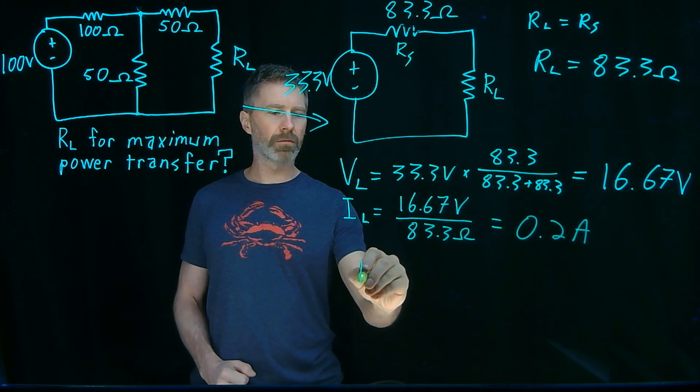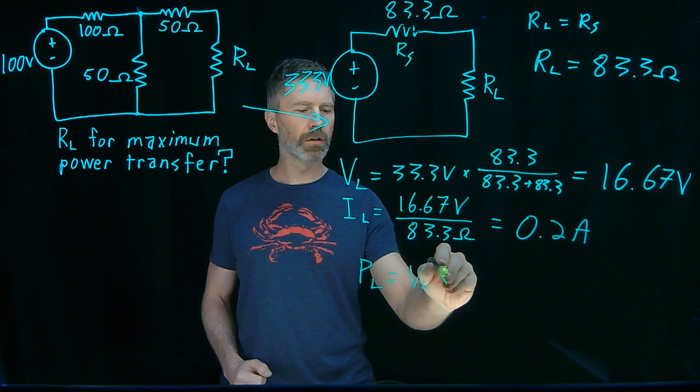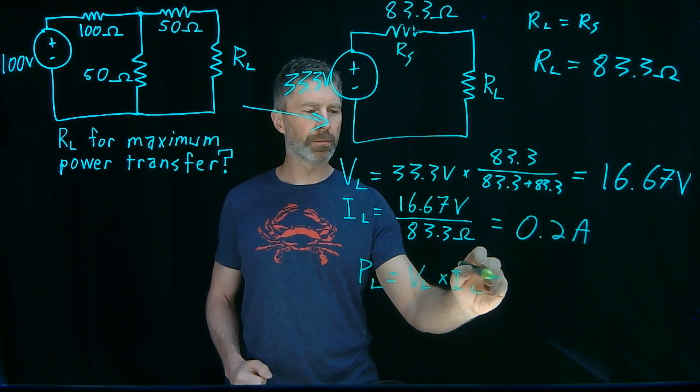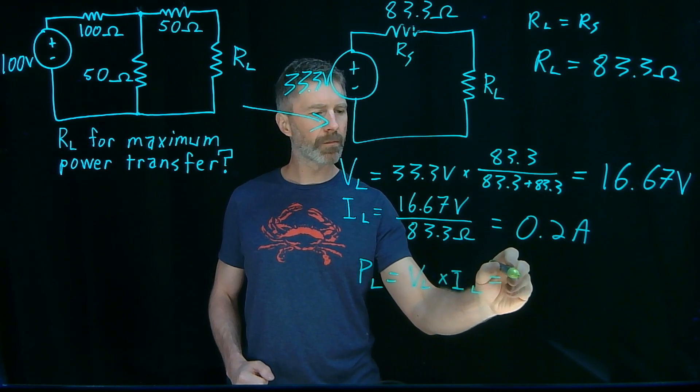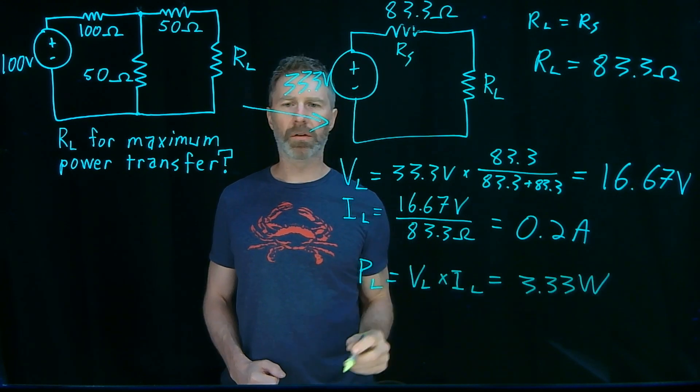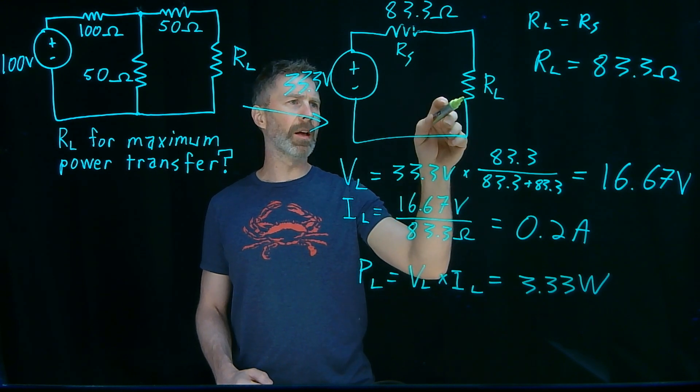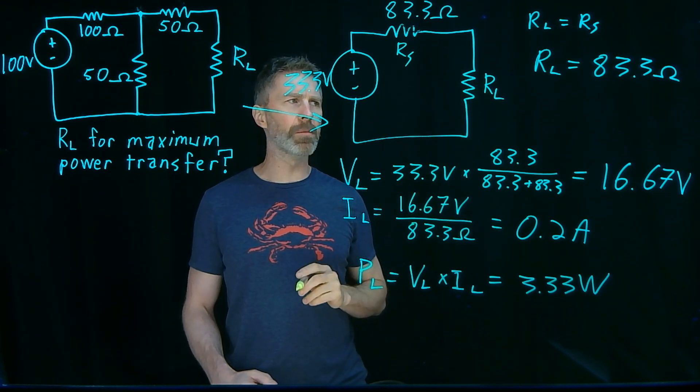And then, finally, what's the power? Actually, maybe we'll do one more thing after power. Power, voltage. Load voltage times load current. 3.33 watts. So 3.33 watts is the maximum power that can be delivered to the load. And that only occurs when the load resistor is 83.3 ohms.